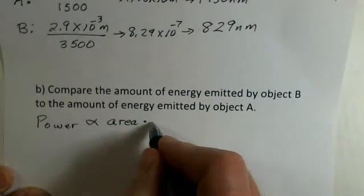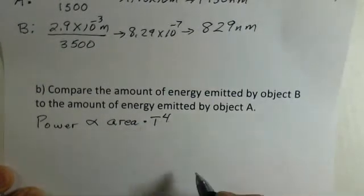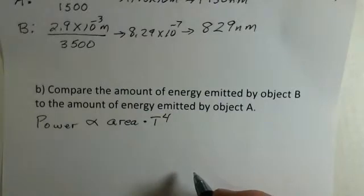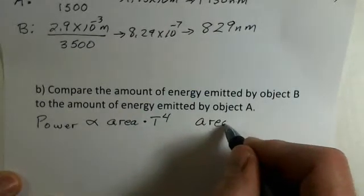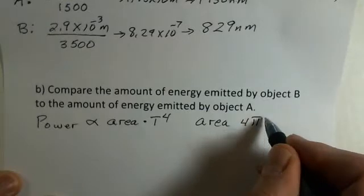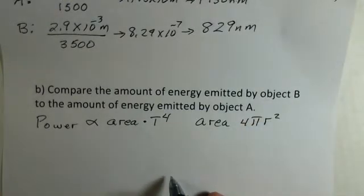Our power emitted is proportional to the area of the object multiplied by T to the fourth power. Again, the temperature is in kelvins. So we have spheres here stated in the problem, so the area of the sphere is 4πr², r is the radius.